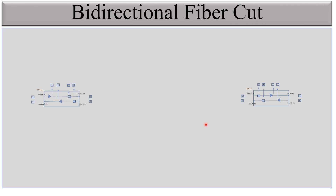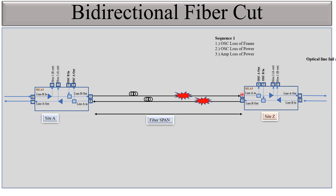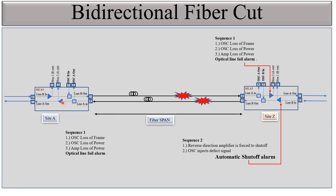Now let's see the bidirectional fiber cut. You can see this is the same setup, but both fibers are cut here. When both fibers are cut, there will be an optical line fail alarm on this amplifier. Then the reverse direction amplifier will be forced to set off, and this amplifier will produce the automatic set-off alarm. Port number 8 is having an optical line fail alarm. Similarly, port number 8 on the other amplifier also receives no power, so it too declares an optical line fail alarm, resulting in an automatic set-off alarm on the reverse direction amplifier.